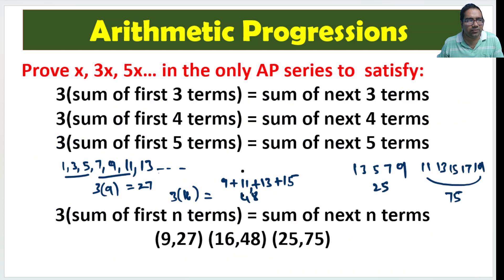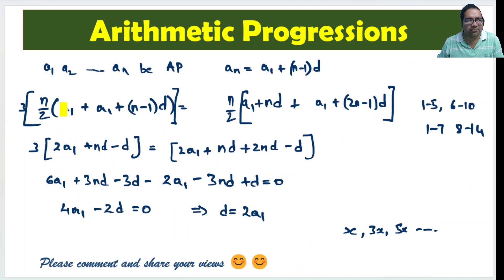Now what is given? 3 times sum of first n terms. What is sum of first n terms? First term plus last term, first term plus nth term into n by 2. That is sum of first n terms. First term is a1. What is nth term? a1 plus n minus 1 into d. This is the nth term. This is the first term. First term plus nth term. Times n by 2. This is the sum of first n terms.